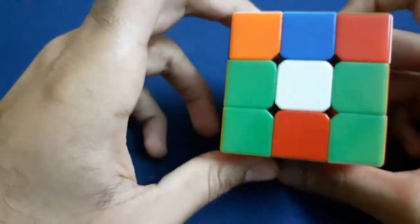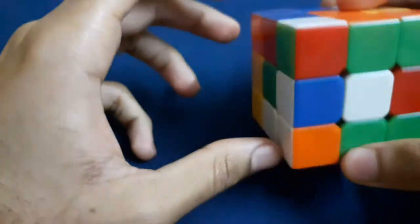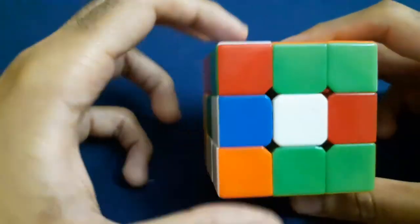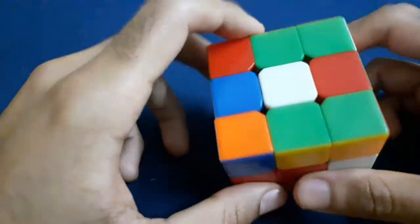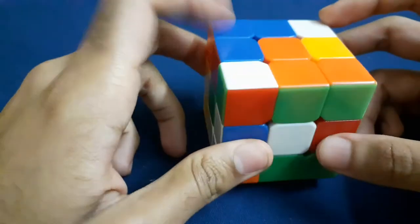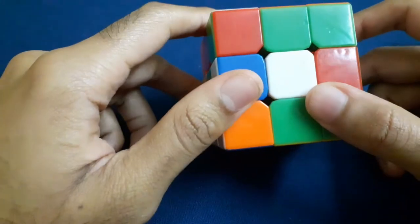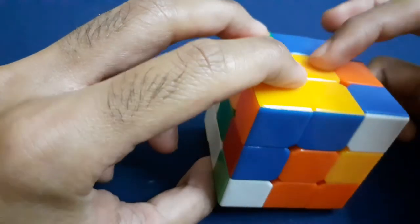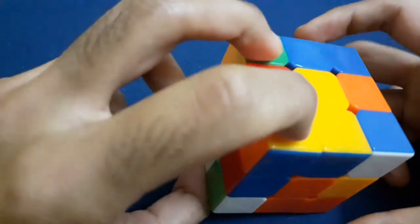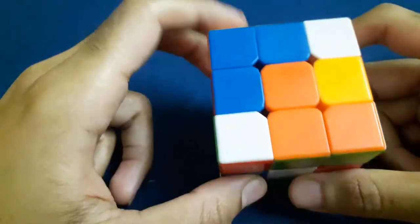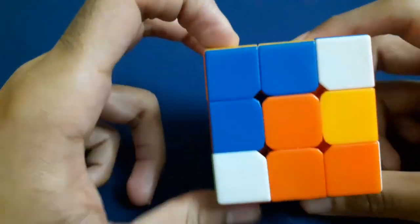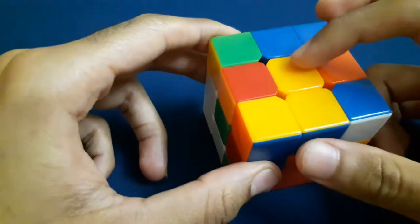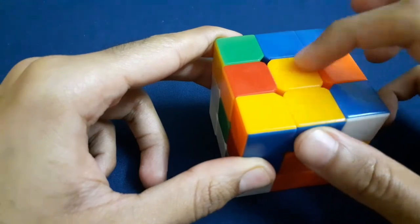This involves none of the crazy algorithms or notations, at least not for the initial steps. So let's begin. You just need to notice that the white face and the yellow face are opposite to each other. What I'll try to do now is first surround this yellow piece.